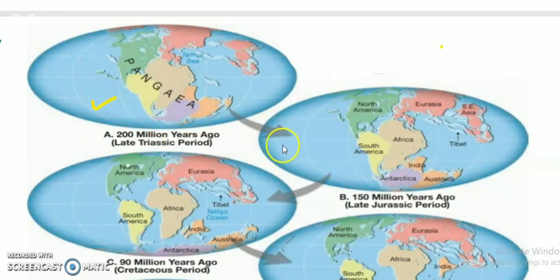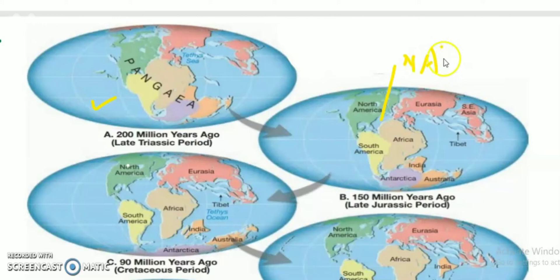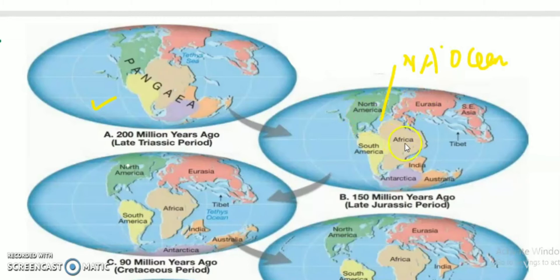The first significant change we see in the breakup of Pangea is the formation of the North Atlantic Ocean. It is in between North America and Africa.